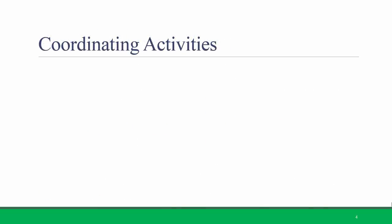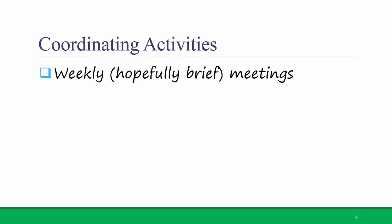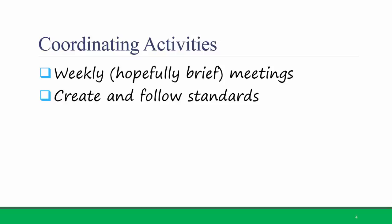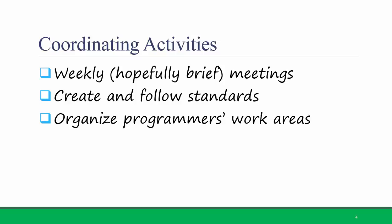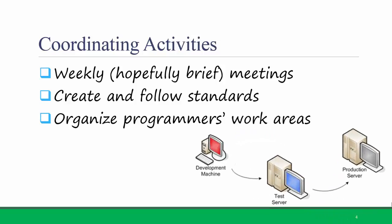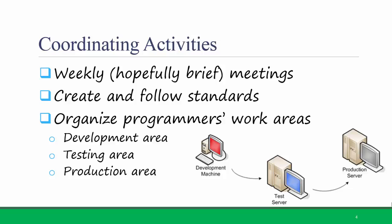Here are some best practices for coordinating activities during the programming process. First, hold weekly, hopefully brief meetings and create and follow standards. These two tips will help keep everyone on the same page and make coordination easier. Another best practice is to organize programmers' work areas. Usually programmers shouldn't code the software on the production server or the area where the system will actually be implemented. A development area is where the actual coding happens. Testing is a separate place where active testing occurs, but not with true organizational valid data. Only after the software has been thoroughly tested should it be installed in the production area.